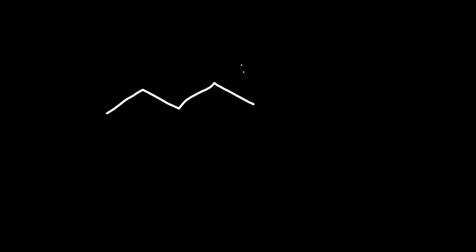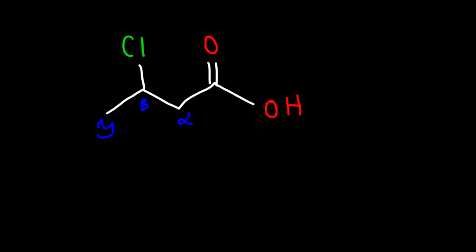So here is another example. Go ahead and write the common name and also the IUPAC name for this particular molecule based on the last example. So let's start with the common name. We know that a four-carbon carboxylic acid is called butyric acid. This is the alpha carbon, the second carbon is the beta carbon, and this is the gamma carbon. So this is called beta-chlorobutyric acid.